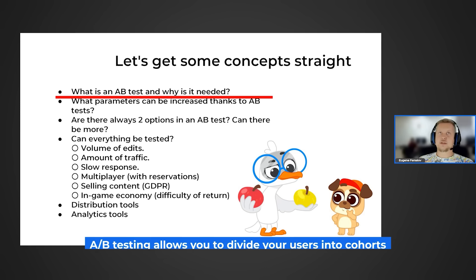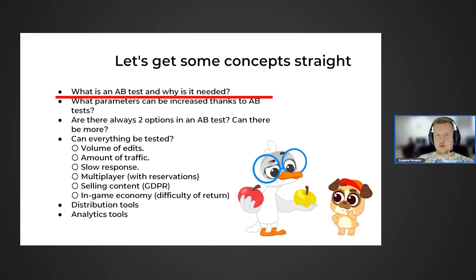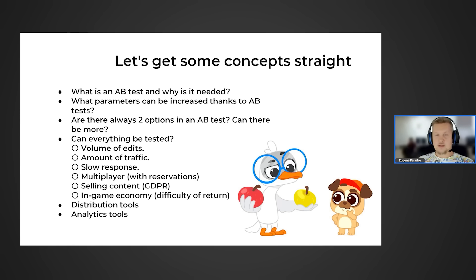A-B testing is a tool that allows you to split your users into cohorts, and in each cohort you test one of your change variants. We divide all our users into two cohorts, apply variant A to one and variant B to the other — that's why tests are called A-B tests. We compare the results obtained in these cohorts and, based on the data, decide which variant performed better and apply it to all users.